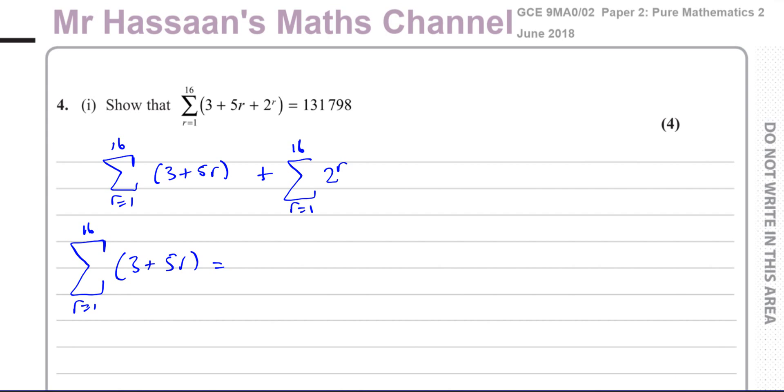The first term is going to be 3 plus 5, which is 8. Then you have to add to that 3 plus 10, which is 13, and then 3 plus 15, which is 18, and the last term will be 3 plus 5 times 16, which is 80, 83. The last term will be 83. So let me just put plus dot dot dot 83. So we can see that this is an arithmetic series.